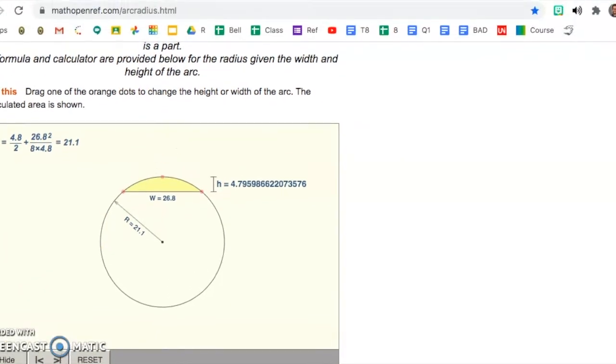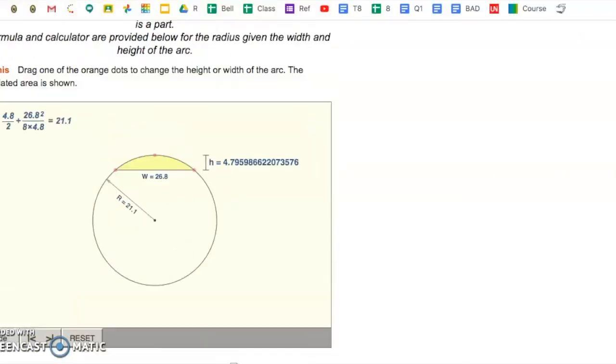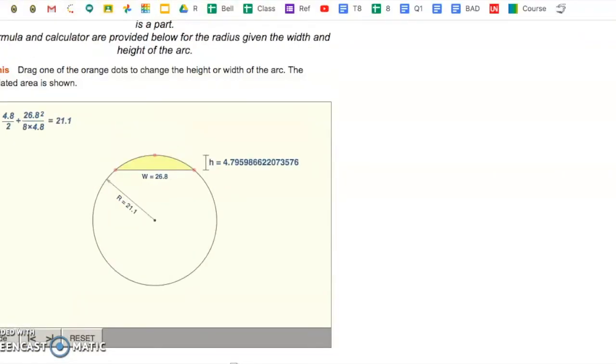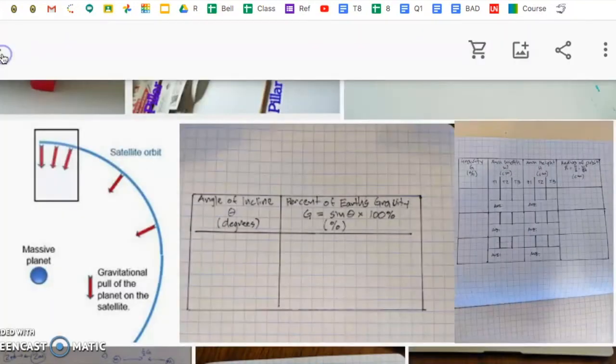To get to all this data, go to mathopenref.com slash all of this dot html. You're going to do this three times so that you have your three different radii here.